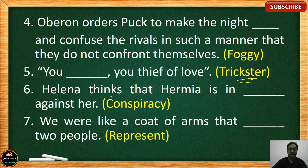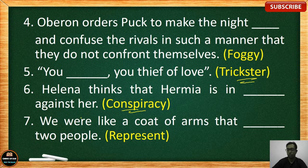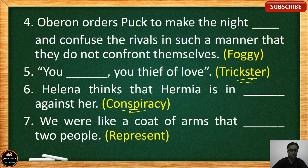Number 6: Helena thinks that Hermia is in dash against her. The correct answer is 'conspiracy' — Hermia is in conspiracy against Helena. I have uploaded explanations of all five acts which will help you in writing questions and answers and understanding the story in detail.